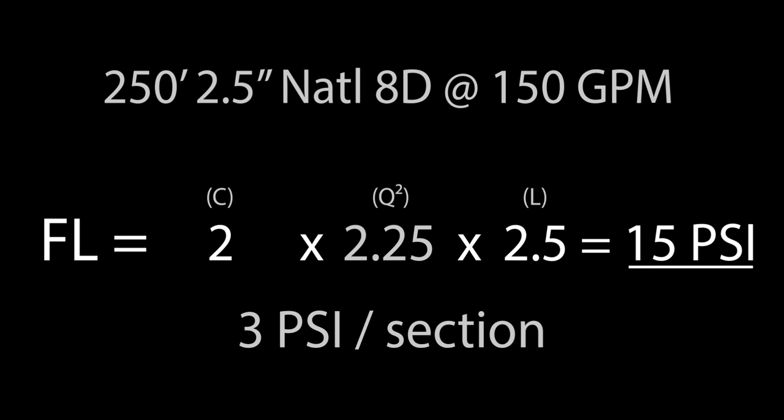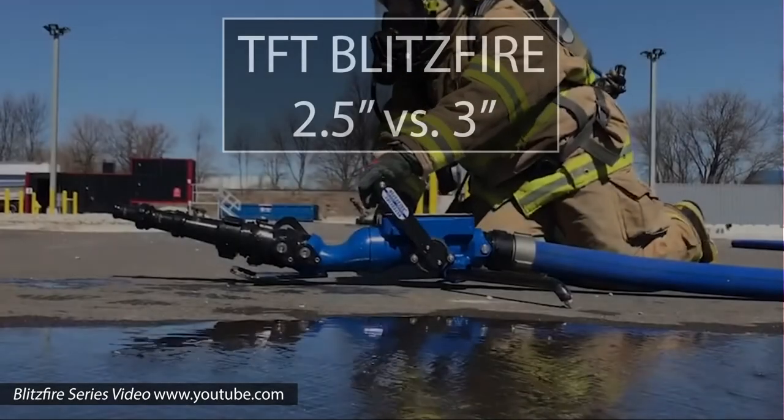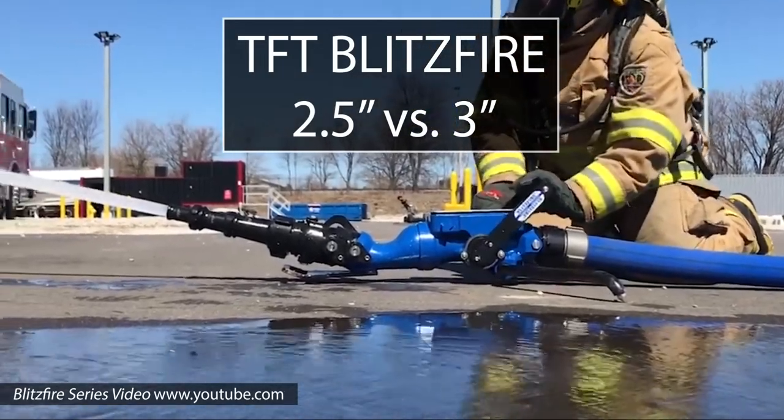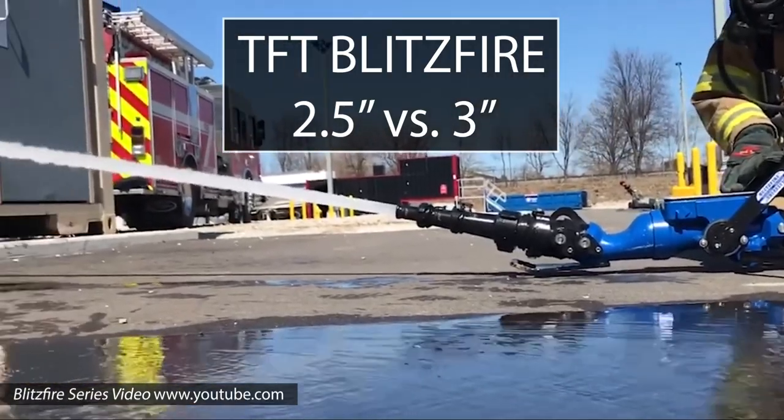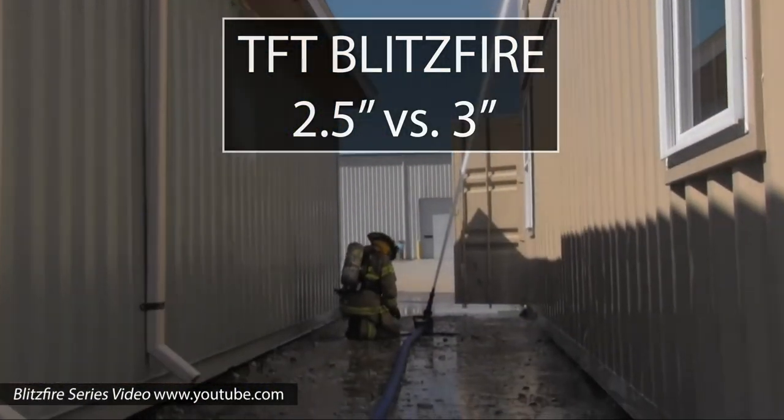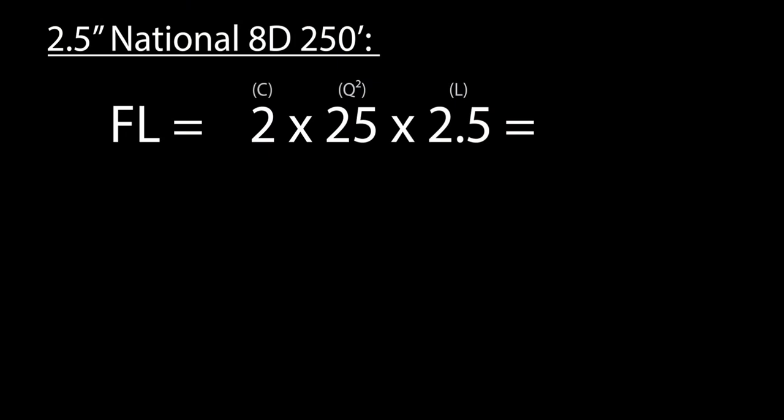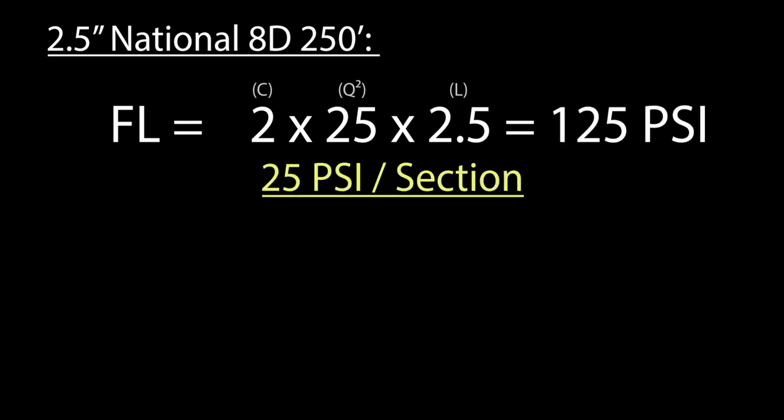So let's look at what happens when we supply a blitz fire with 500 GPM through 2.5 inch compared to 3 inch hose. Using our formula, we can see the theoretical friction loss for our 2.5 inch hose comes out to 25 PSI per section.